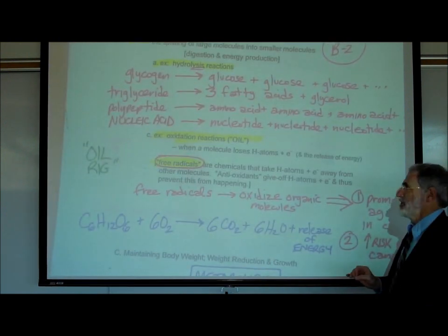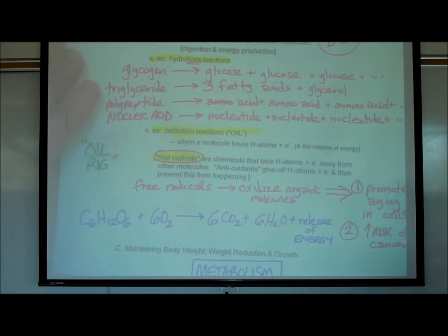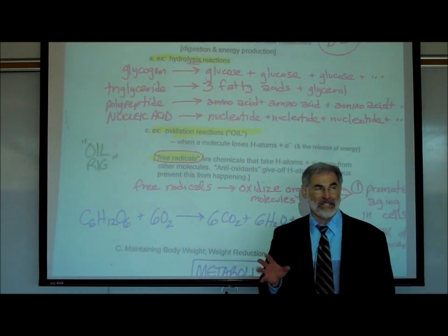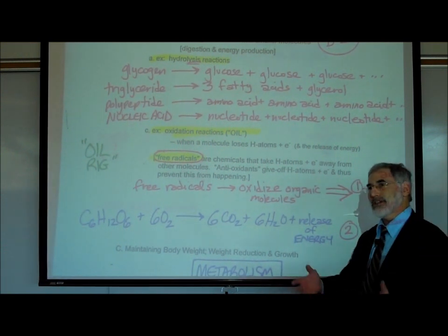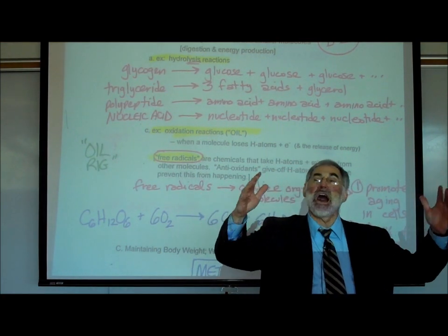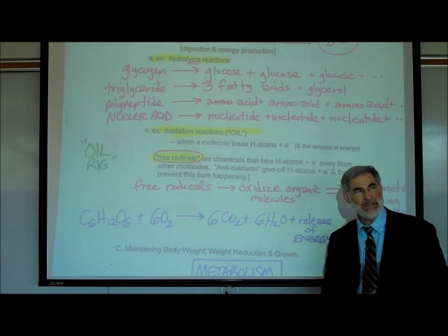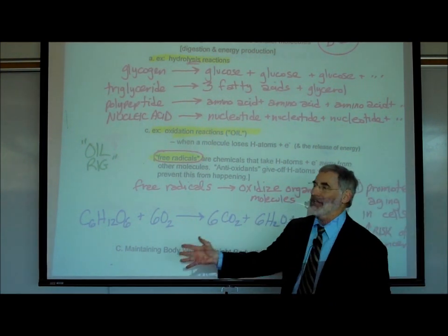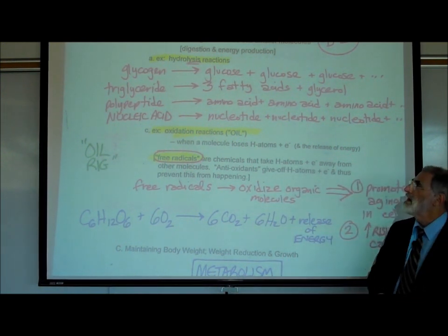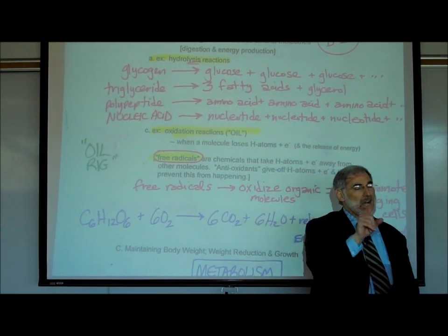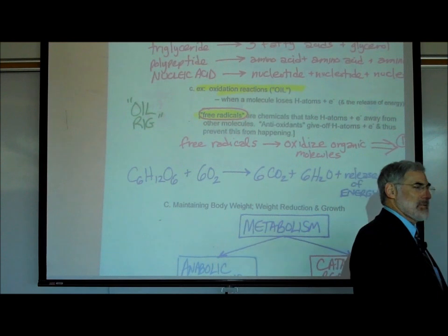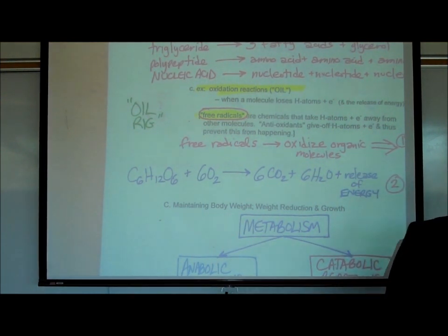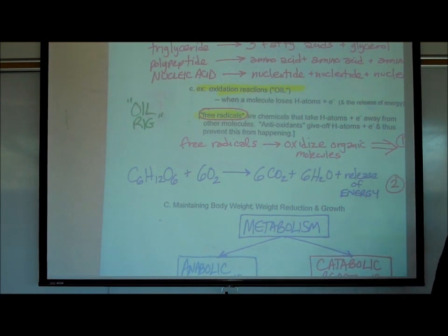There's another type of catabolic reaction called oxidation reactions. Oxidation reactions are the exact opposite of a reduction reaction — in chemistry they're called oxidation-reduction reactions or redox reactions. An oxidation reaction is when a molecule loses hydrogens and electrons — the exact opposite of reduction. The mnemonic I've given you is OIL — oxidation is a loss of hydrogens. So if you remember OIL RIG: oxidation is a loss of hydrogens, reduction is a gain of hydrogens. Another version is LEO GER — loss of electrons is oxidation, gain of electrons is reduction.